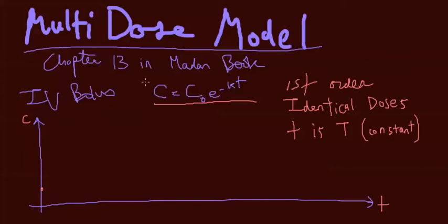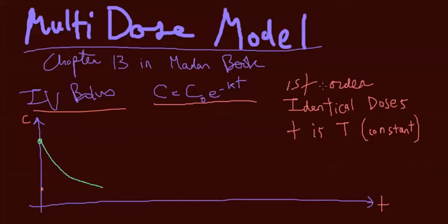So what is the multiple dose model? It's just going to be IV bolus. IV bolus follows this equation where C is equal to C0 times e to the negative KT. As a reminder, here's what the graph looks like from an IV bolus shot — the concentration shoots straight up and then goes down.